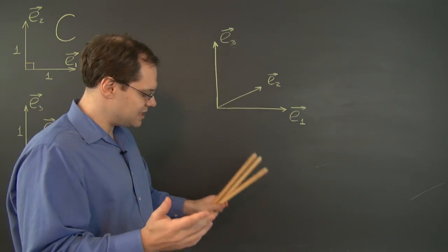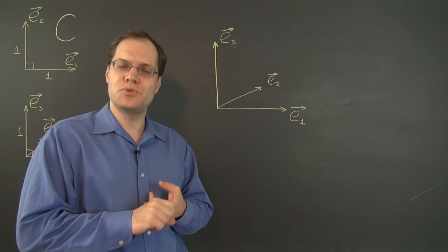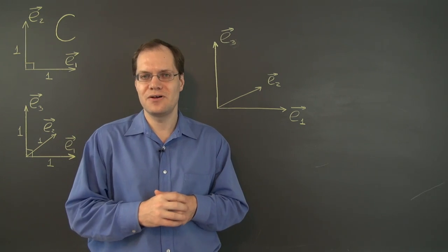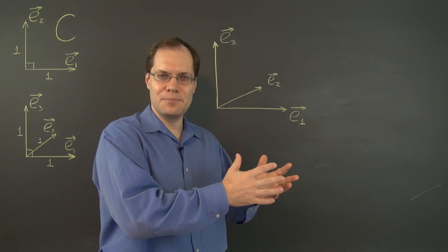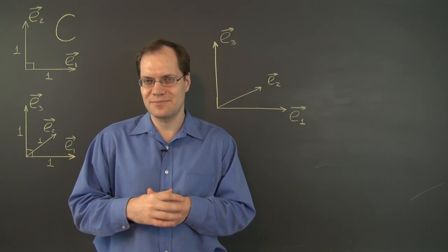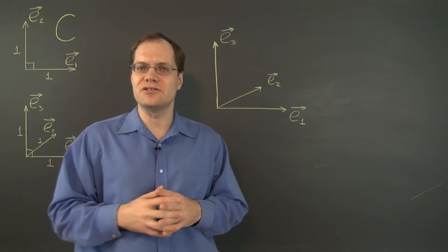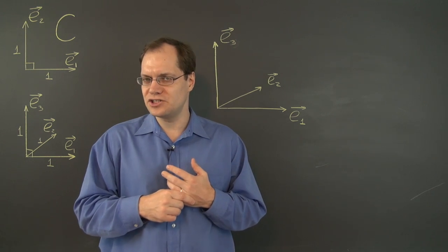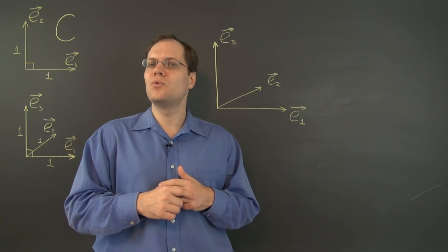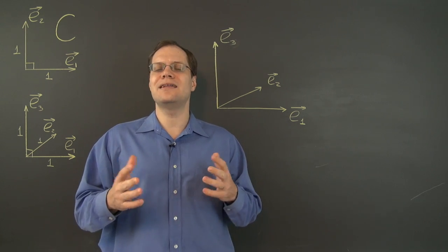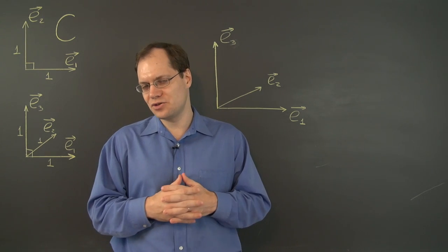I could ask the same questions as in the two-vector case: what happens when we flip one of the vectors, switch any two of the three vectors, or add a multiple of one vector to another? All answers are the same — flipping changes orientation, switching changes orientation, and adding a multiple preserves orientation. So once again it acts just like determinants. This completes the geometric approach to basis orientation.